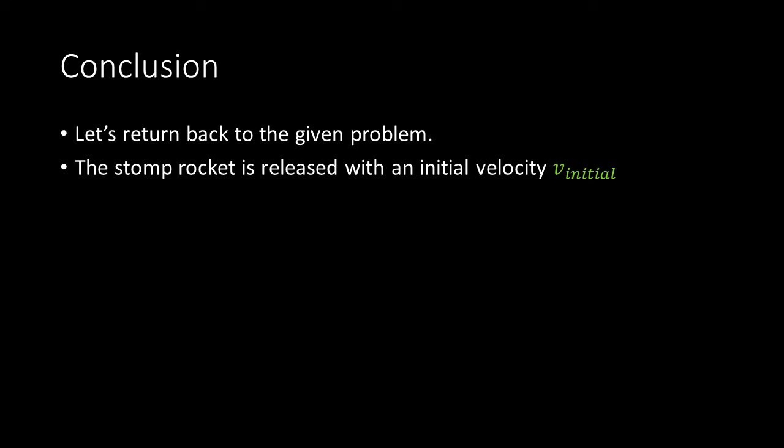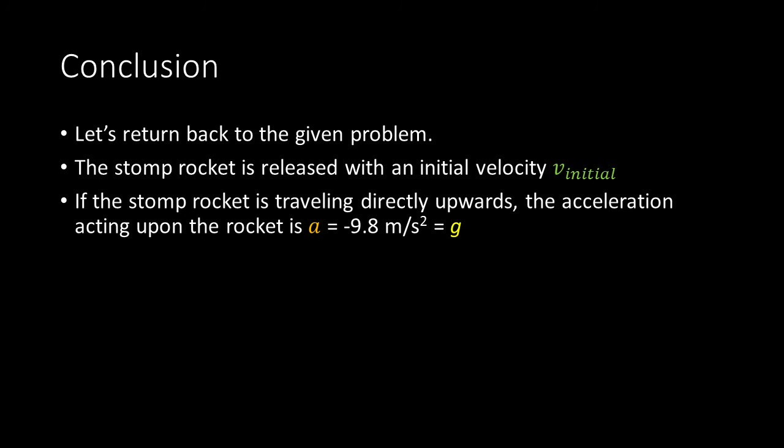Let's return back to the original problem. The stomp rocket is released with an initial velocity v-initial. So if the stomp rocket is traveling directly upwards, that means that the acceleration acting on the object is equal to the acceleration due to gravity. So a is equal to negative 9.8 meters per second squared, which is equal to g.